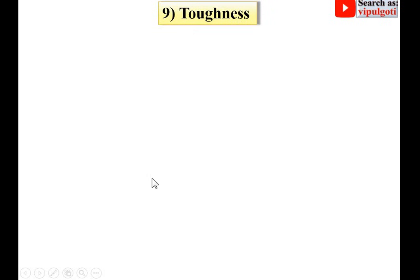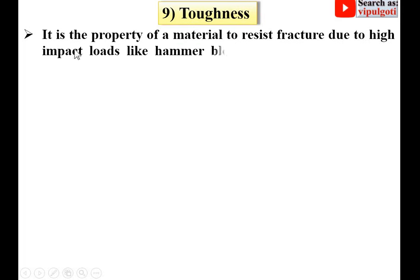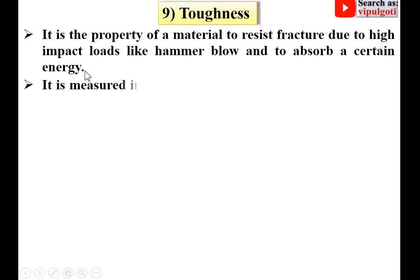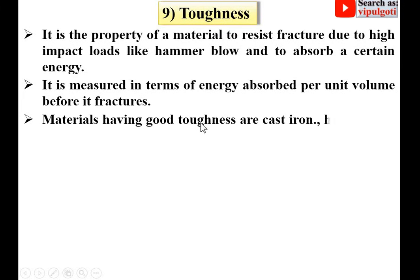Next, toughness. It is the property of a material to resist fracture due to high impact loads like hammer blows and to absorb a certain amount of energy. It is measured in terms of energy absorbed per unit volume before fracture. Materials having good toughness include cast iron, high carbon steel, ceramics, etc.